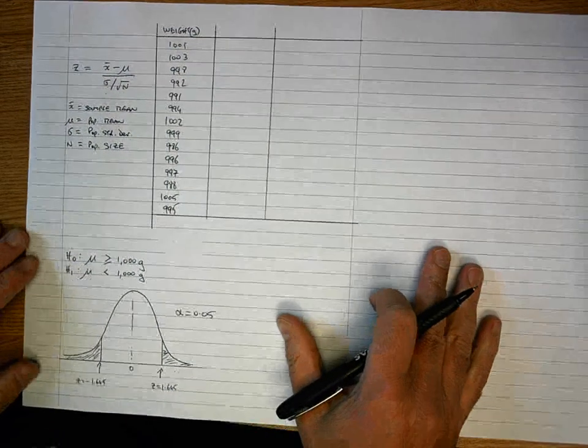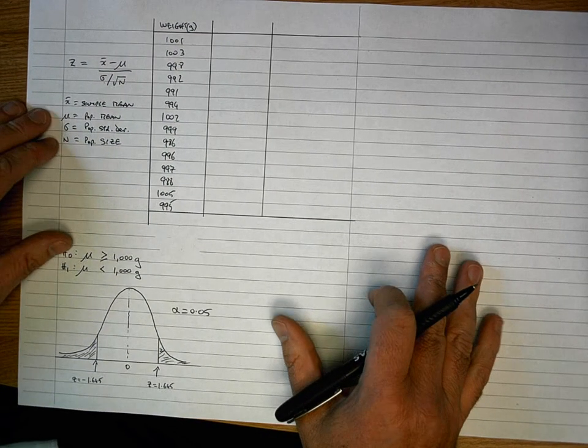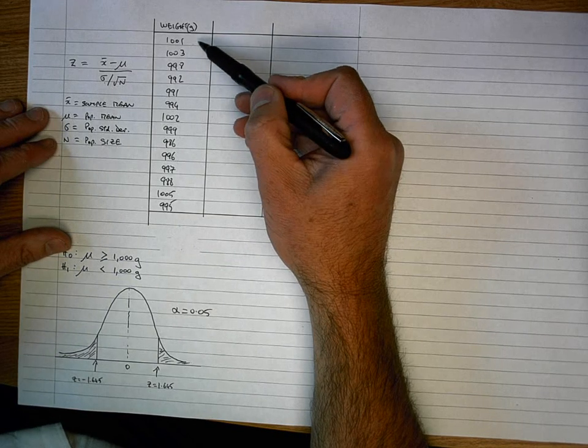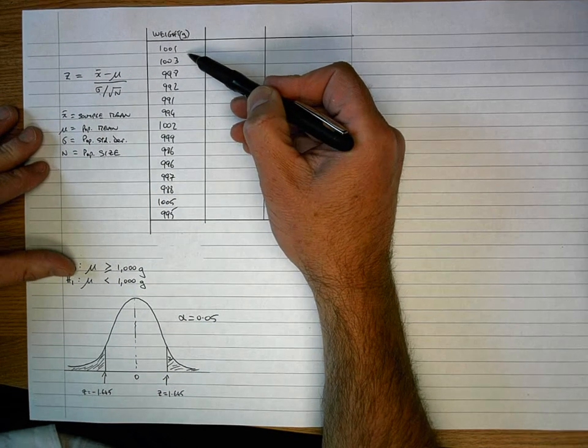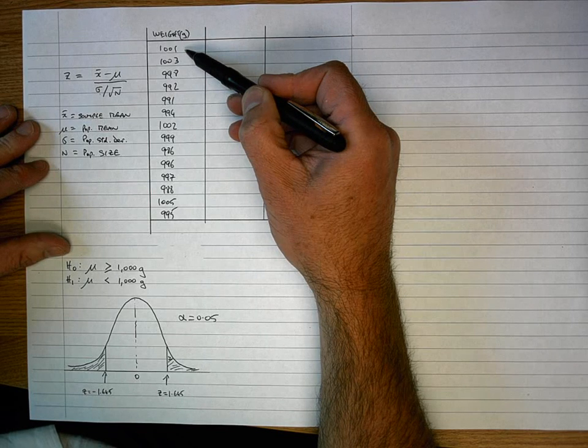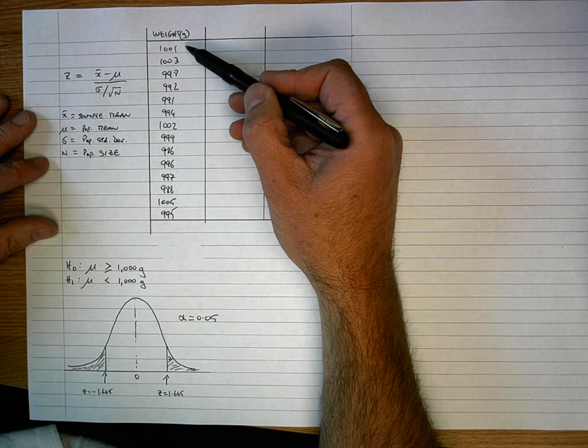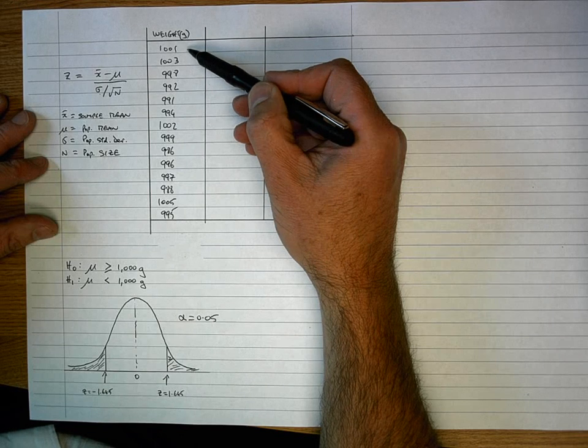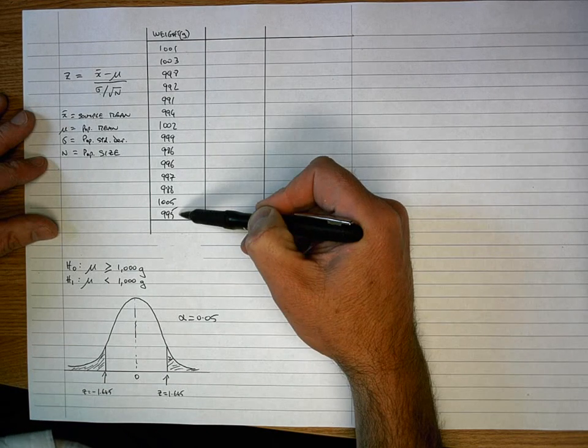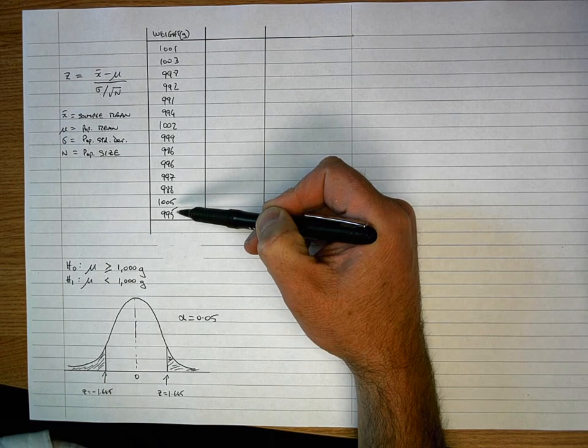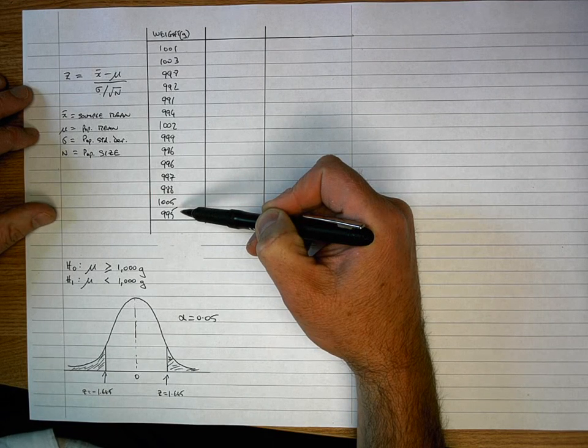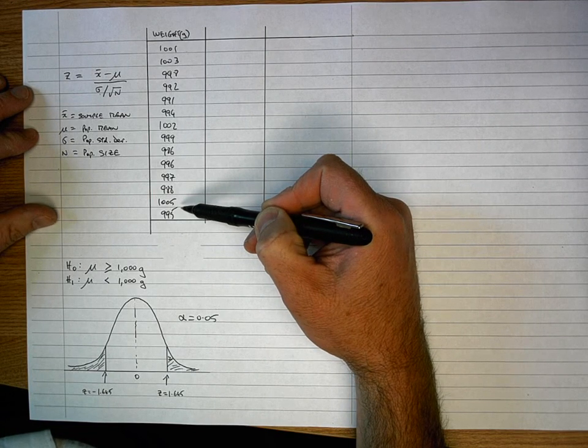So before we start, let's take a look at some data. Let's say a food manufacturer has made a claim that their 1kg or 1,000g bags of food weigh at least 1,000g or more. So I'm going to make an inference about that population by taking a sample. In this particular case, I have measured 14 bags of food as a sample and I'm going to make an inference about the population based on this sample.